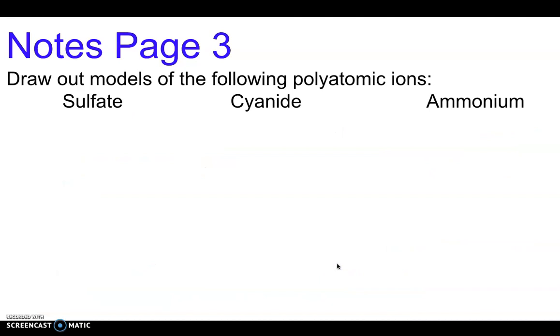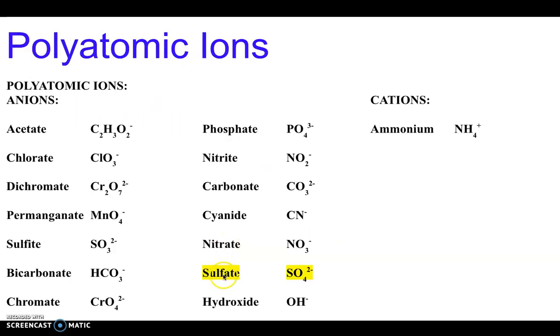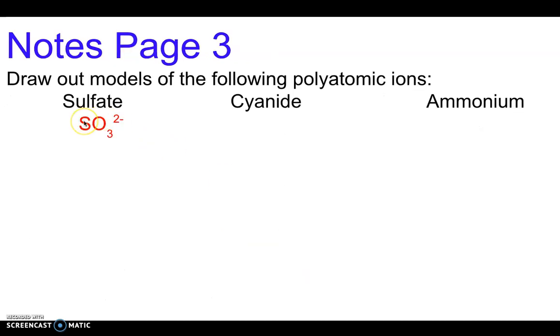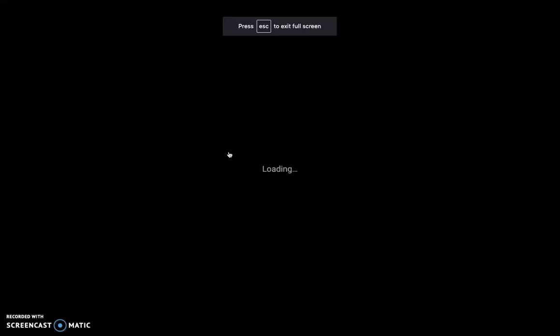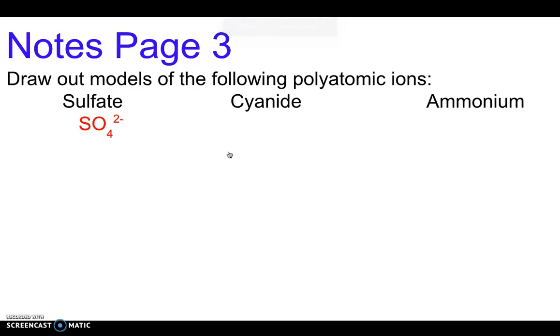Let's draw out the models of the following polyatomic ions for our last page of notes. First up is sulfate. Here's sulfate right here. You can see that it has the formula SO4 2-. That's a sulfur with four oxygens bonded around it. They don't actually quite bond like this - this isn't a Lewis structure, this is just a simple model. That whole cluster of atoms has a -2 charge. We can see that from the 2- up there.